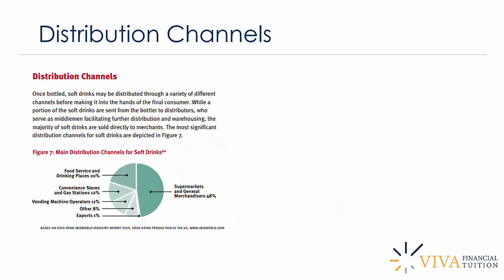Looking at distribution channels, unsurprisingly supermarkets and general merchandisers account for the majority of distribution of soft drinks. The remaining channels include food services and drinking places such as restaurants making up 20%, then convenience stores and gas stations, and vending machines at 11%. Supermarkets and general merchandisers are the major players in terms of getting drinks to final consumers.